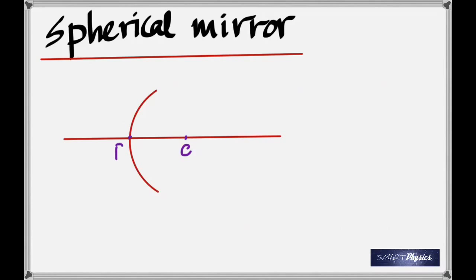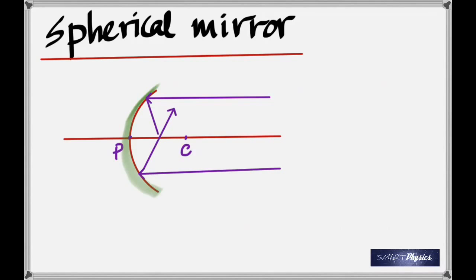If you have parallel rays fall on a concave mirror, they will always pass through a particular point exactly between P and C — that's called the focus. Parallel rays come from infinity, so if you turn the concave mirror towards the sun, which is almost at infinity, the image of the sun would form at the focal point. It would be extremely diminished — a point. When an object is at infinity, the image is at the focal point.